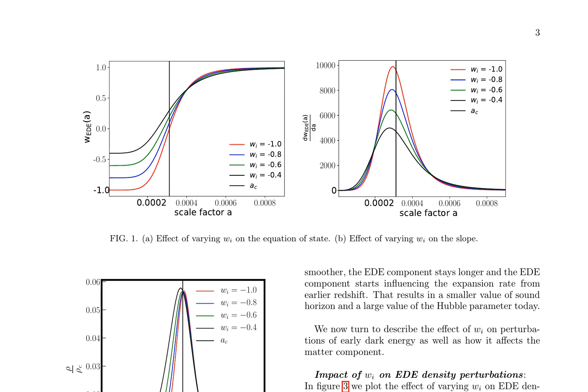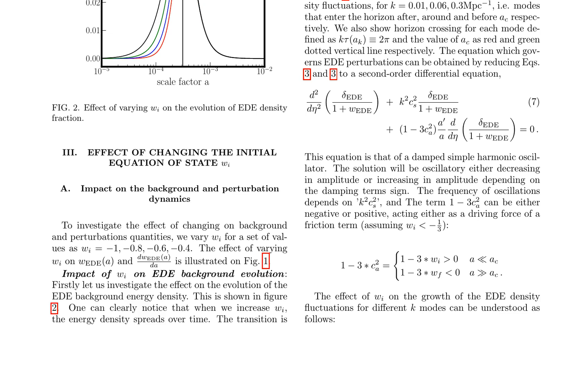As WI increases, the transition to the EED-dominated era becomes smoother, its influence on the expansion rate persists longer, and the sound horizon shrinks. This is illustrated in Figures 1 and 2, which depict the evolution of EED's background energy density. Furthermore, Figure 3 shows how varying WI affects EED density fluctuations, highlighting the impact on modes entering the horizon at different times.